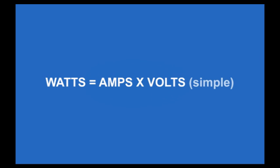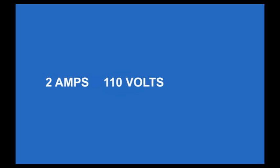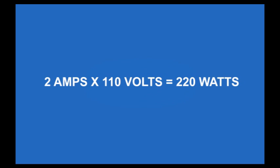So, as an example, say you have an appliance. This appliance uses 2 amps at 110 volts. How many watts? Well, it's 2 times 110 equals 220 watts.